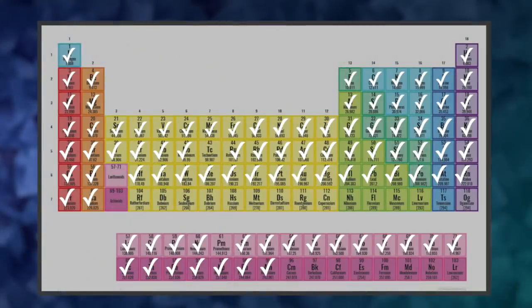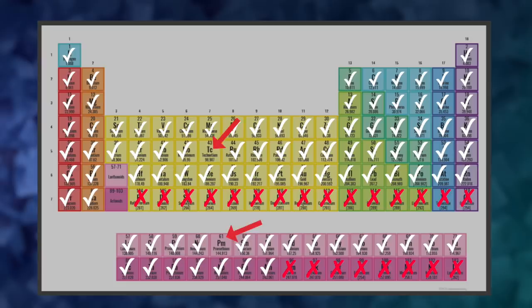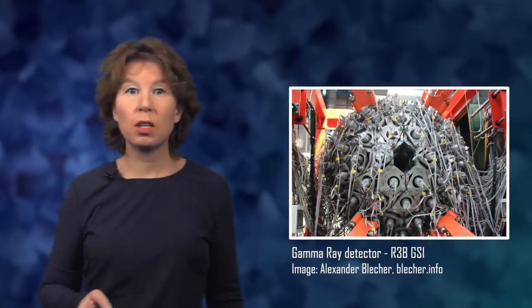You may have noticed that we haven't checked off the heaviest elements in the periodic table and that there are a few missing in between. That's because they are unstable. They decay into smaller nuclei in times between a few thousand years and some microseconds. Those that were produced in stars are long gone. We only know their properties because they've been created in laboratories by shooting smaller nuclei at each other with high energy.